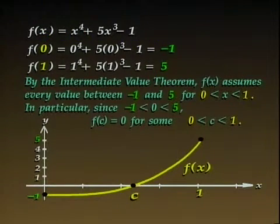We evaluate the function at the endpoints of the interval. We find that F(0) = -1 and F(1) = 5. The intermediate value theorem guarantees that F assumes every value between -1 and 5 at some point in the interval from 0 to 1. In particular, F(C) = 0 for some C in the interval from 0 to 1.